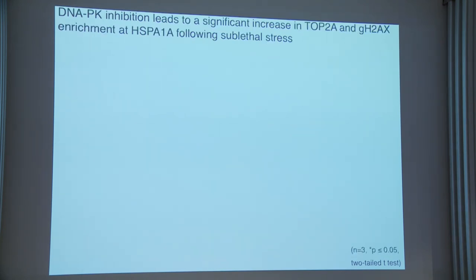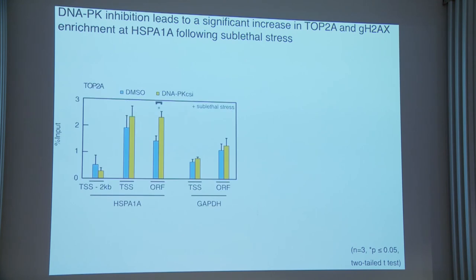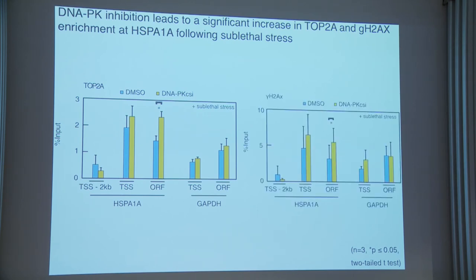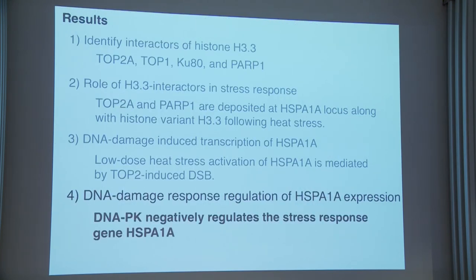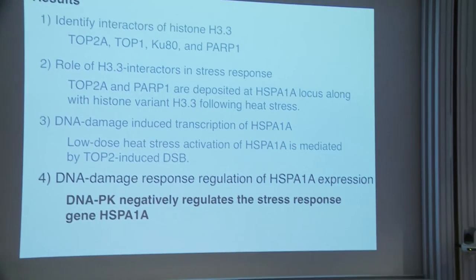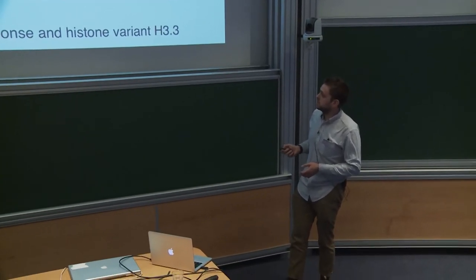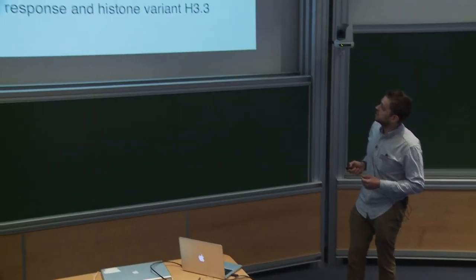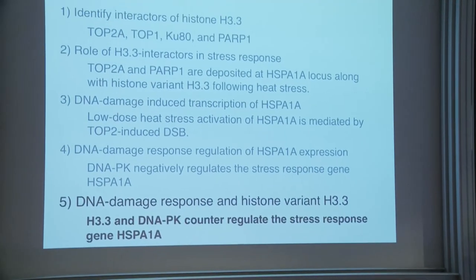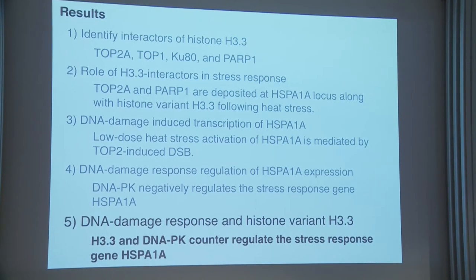I then used ChIP to examine the effect of DNA-PK inhibition at the HSPA1A locus. Following sublethal stress combined with DNA-PK inhibition, I found an increase of TOP2A at the ORF of HSPA1A, and similarly for gamma-H2AX. Based on all this data, DNA-PK appears to be negatively regulating the stress response gene HSPA1A. I also performed an H3.3 knockdown with similar experiments and found that H3.3 and DNA-PK counter-regulate the stress response genes HSPA1A and B specifically.